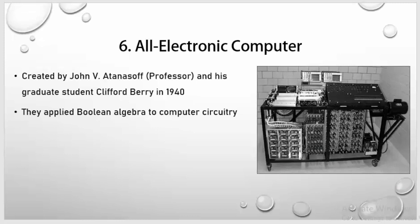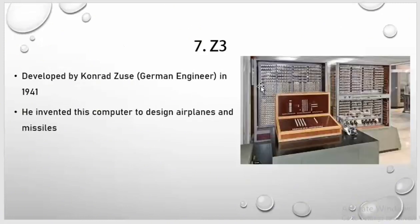Sixth one is All Electronic Computer. It was created by John V. Atanasoff, a professor, along with a graduate student Clifford Berry. He created this machine in 1940. They applied Boolean algebra to computer circuitry. Boolean algebra is basically a branch of mathematics that deals with operations on logical values with binary variables. Boolean variables are represented as binary numbers: 1 for true and 0 for false.